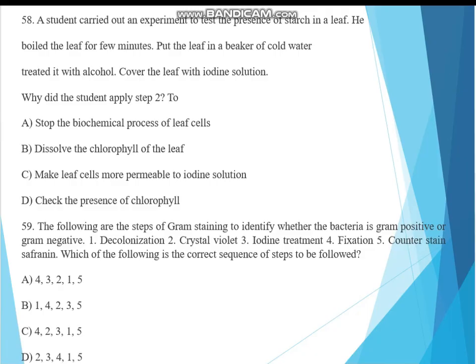Question 58. A student carried out an experiment to test the presence of starch in a leaf. He boiled the leaf for a few minutes, put the leaf in a beaker of cold water, treated in alcohol, covered the leaf with iodine solution. Why did the student apply step 2? A. To stop the biological process of the leaf cells, B. Dissolve the chlorophyll of the leaf, C. Make leaf cells more permeable to iodine solution, D. Check the presence of chlorophyll. The answer must be A, stop the biochemical process of the leaf.